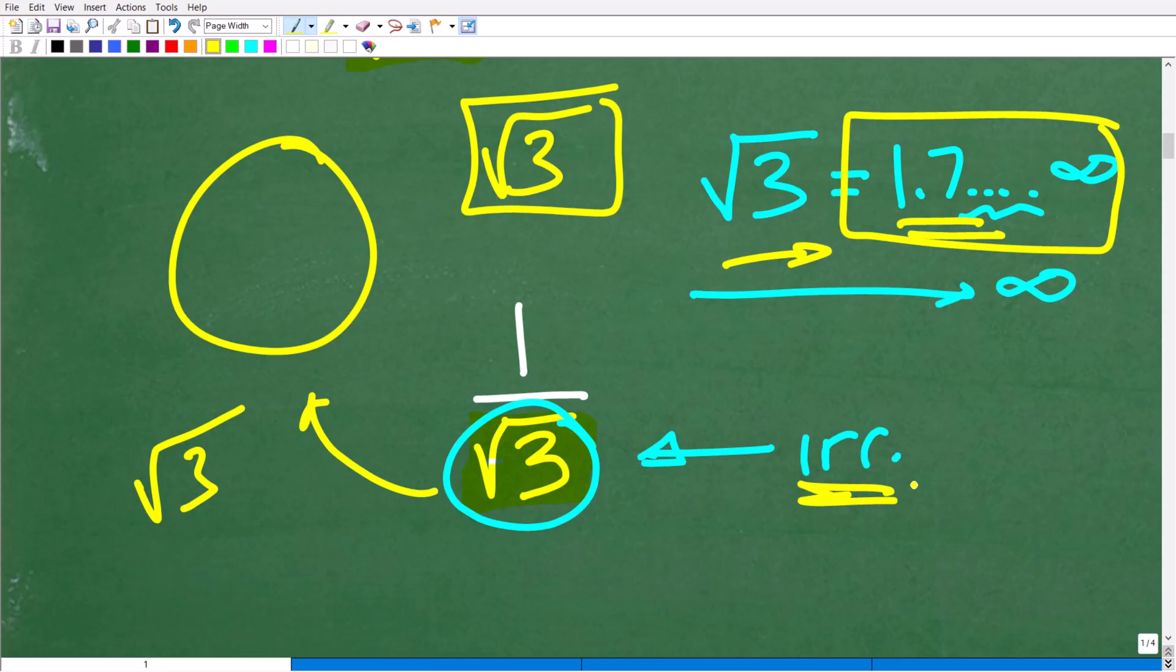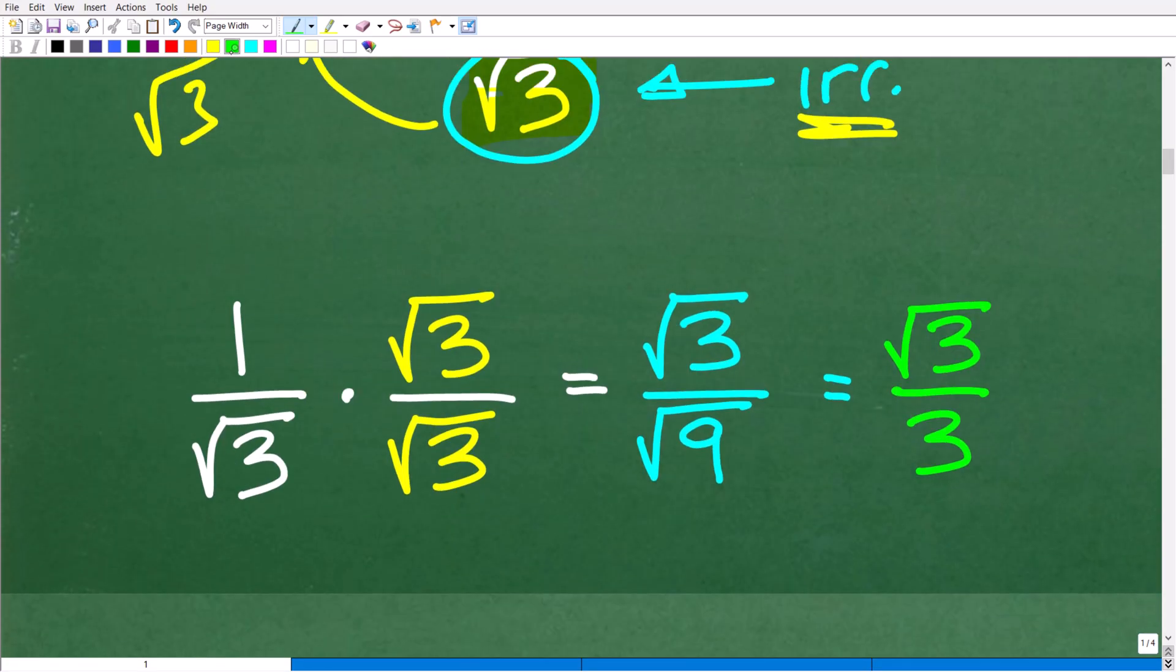So you might be saying, all right, well, how do we fix this? Well, let's go ahead and take a look at exactly how we fix this situation. So what we're going to do is we're going to take our problem, 1 over the square root of 3, and we're going to multiply it by 1.